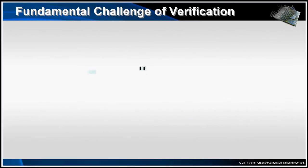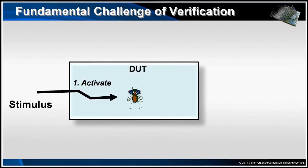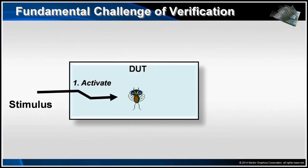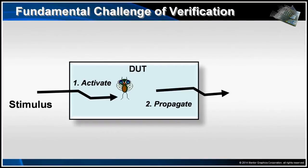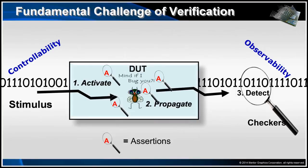First, let's understand the fundamental challenges of verification, which consist of three conditions that must be met. To verify the design, we must generate stimulus to activate a specific line of code, structure, or interesting behavior in the design. However, that in itself is insufficient to properly verify the design. We must next generate additional stimulus that will propagate the previously activated line of code, structure, or interesting behavior to an output or a point in the design where we can observe it. Then we must have a checker in place that can detect the correct or incorrect results.